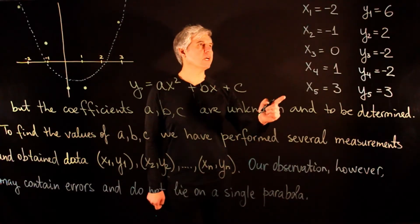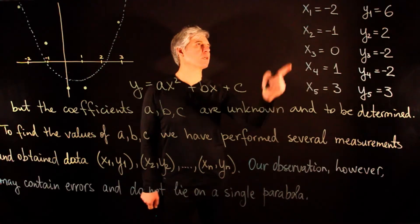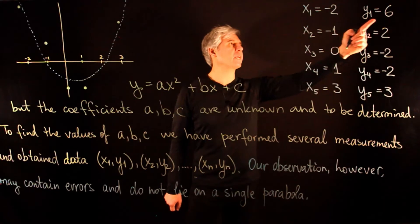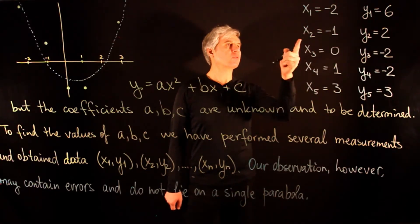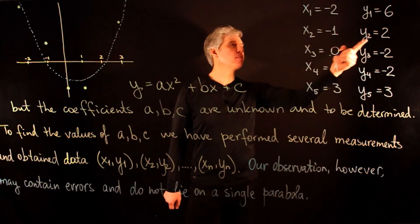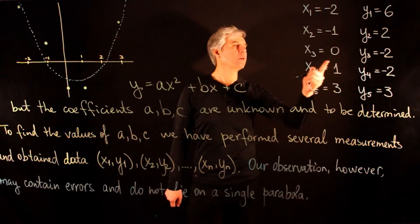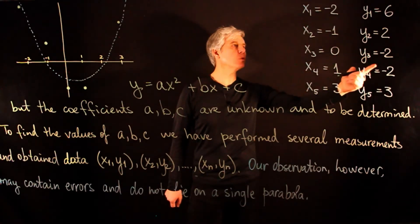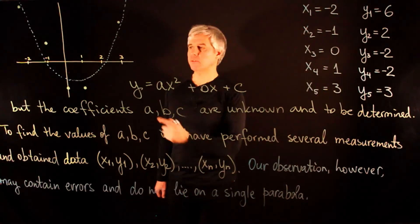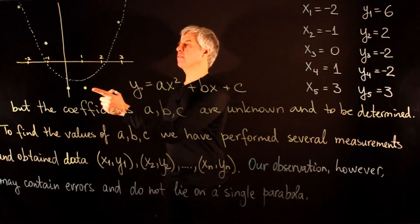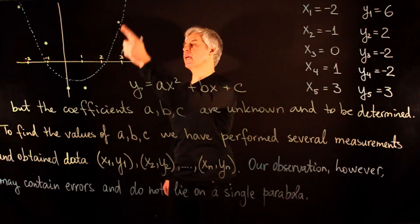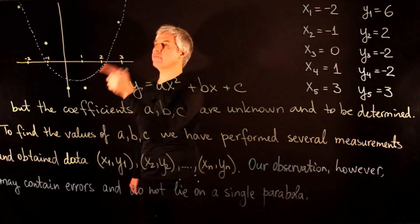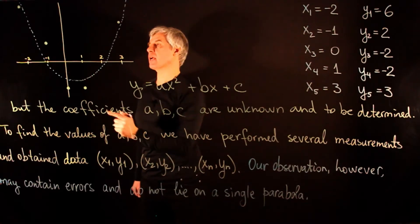Suppose we have the following five data points. When x equals minus 2, y is measured to be 6. For x equals minus 1, the measured value of y is 2. For x equals 0, the measured value of y is minus 2, and so on. If we plot these five data points, we see that they do not lie on a single parabola.